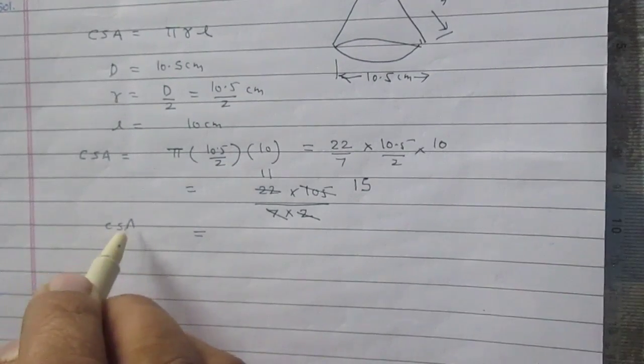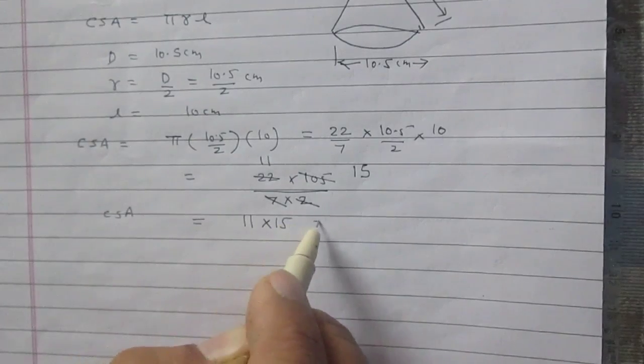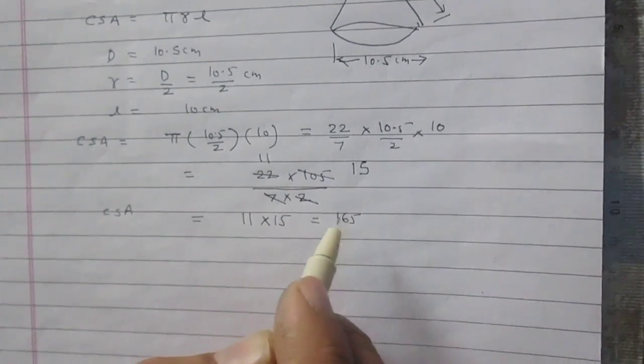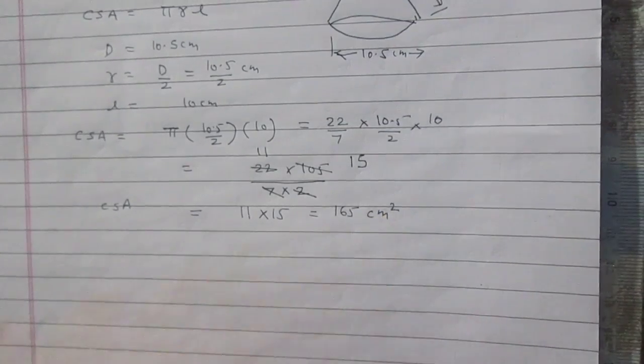So curved surface area of the cone is 11 multiplied by 15, which is 165. So it is 165 cm square.